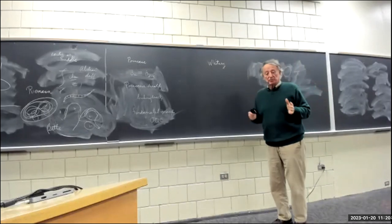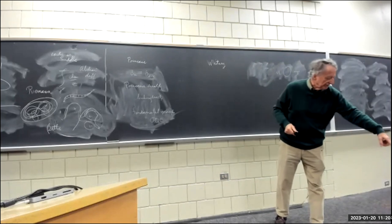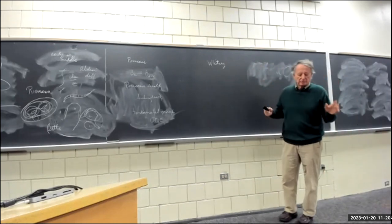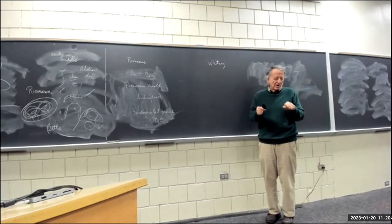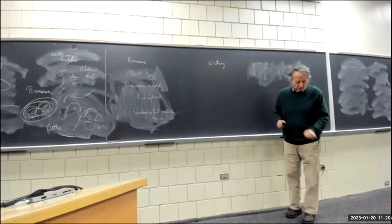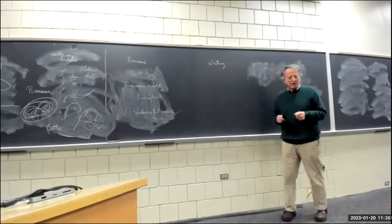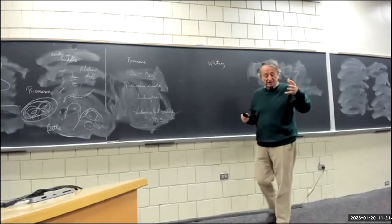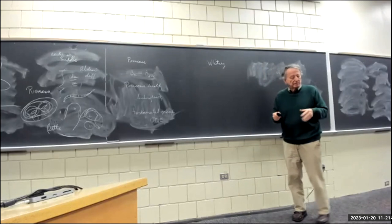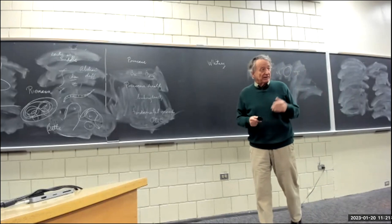The obstructions lived in certain functions on the cells of the space. If you got an obstruction, you backed up, tried to change your previous construction, and went forward again. The function changed in a certain way, and the quotient group is where the real obstruction lived. That's called cohomology.